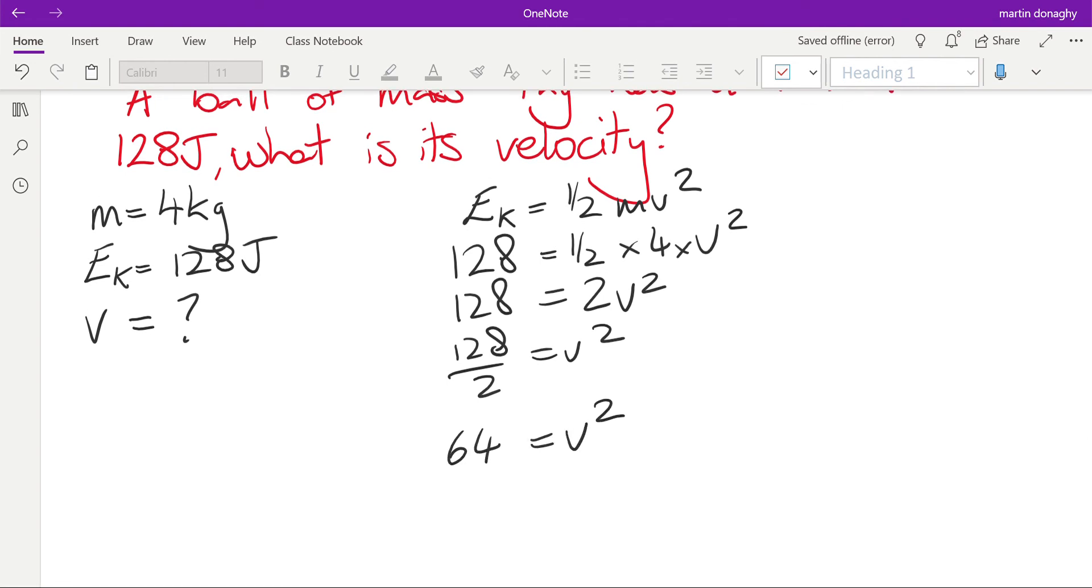That gives us 64 equals v squared. Take square roots of both sides, which leaves us with v on one side, and the square root of 64 is just eight. And it's a velocity, so it's eight meters per second.